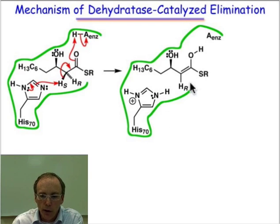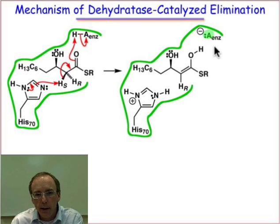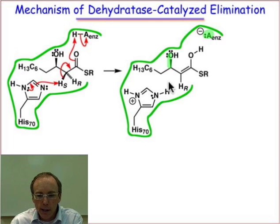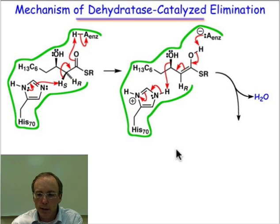We'll have the enol geometry of this thioester, and then the mystery side chain is going to be in its deprotonated or ionized form. This ionized functional group is going to turn around and be used as a base to eliminate the elements of water. The elements of water will be lost because as that leaving group leaves, it will pick up a proton from the imidazole ring that's now in its ionized form. That's the electron flow associated with that process.